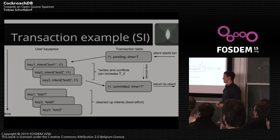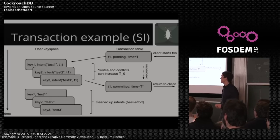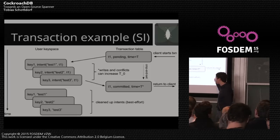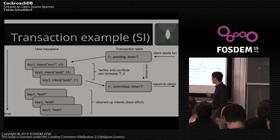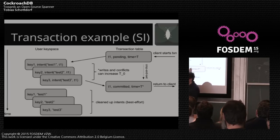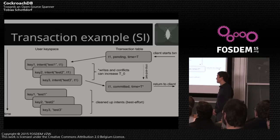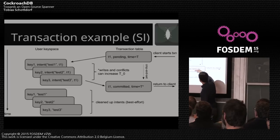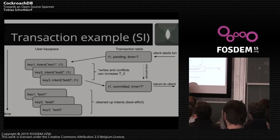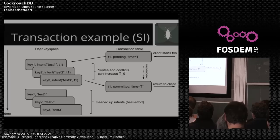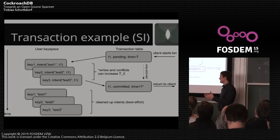This is serializability, based on write snapshot isolation. A client reading after a transaction commits will always see that transaction's values — in the worst case they see an intent that hasn't been upgraded to a value, but then they check the transaction table, see it's committed, and upgrade it themselves. So people who read the data actually clean it up while doing their read. We obviously make an effort to not have them see those intents by cleaning them up as fast as we can.